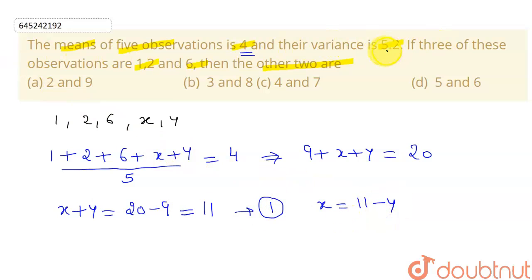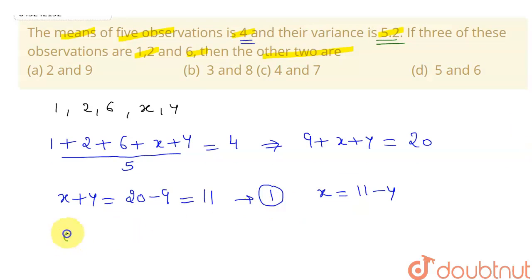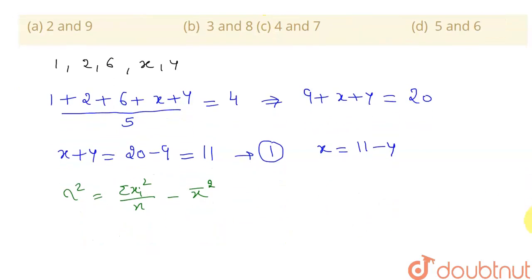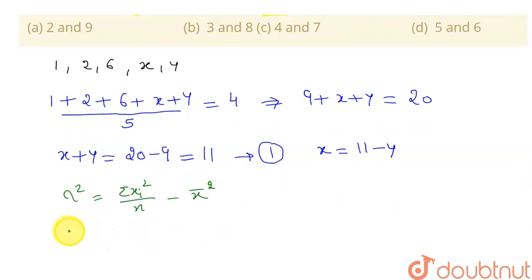Now let me consider the variance, which is given as 5.2. The formula for variance, represented by sigma squared, is: the sum of the squares of the observations divided by the number of observations, minus the square of the mean.